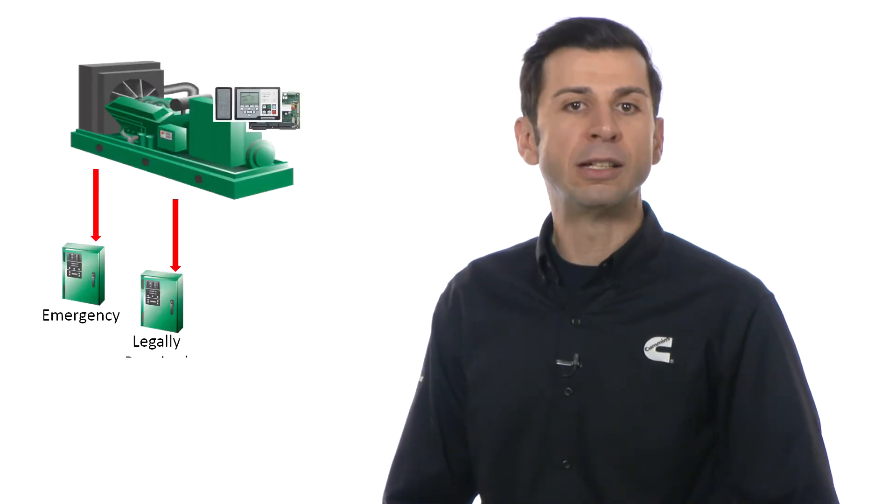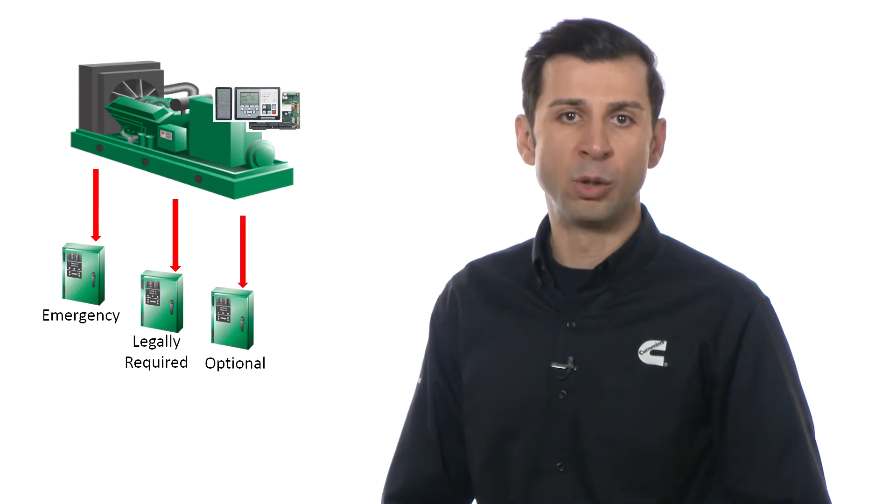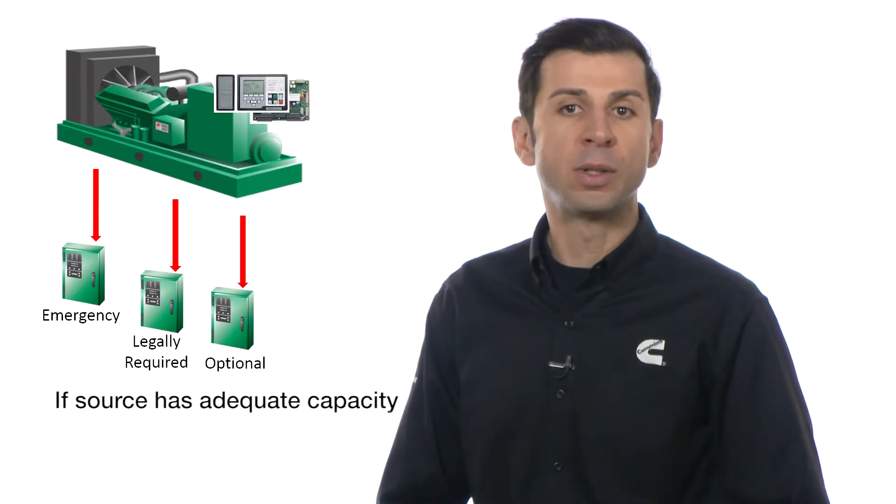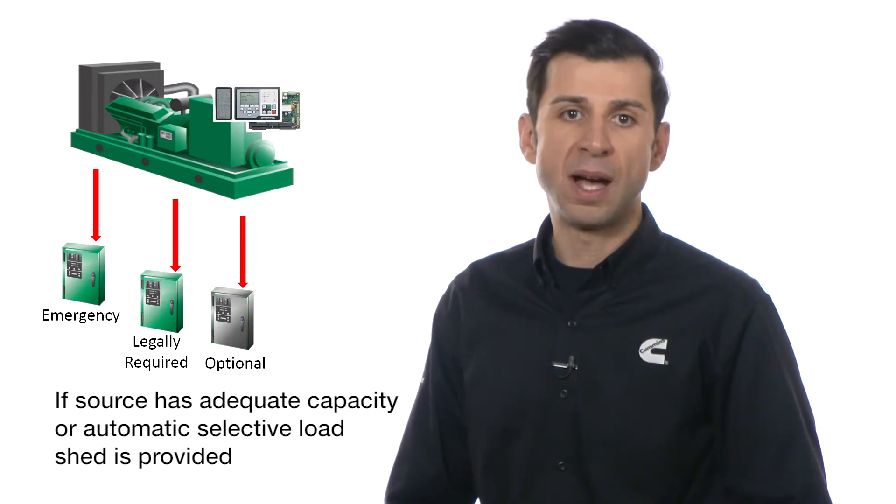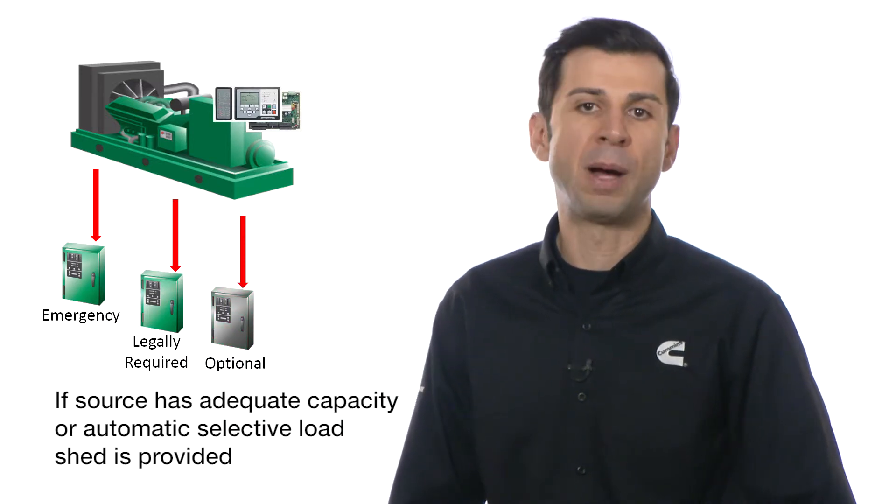The U.S. National Electric Code allows the alternate power source to supply emergency, legally required, and optional system loads where the source has adequate capacity or where automatic selective load shed is provided as needed to ensure adequate power.